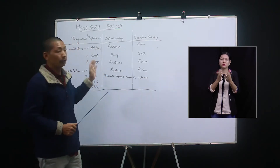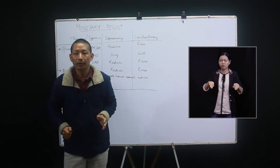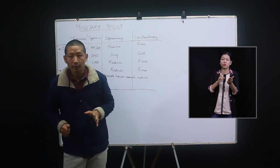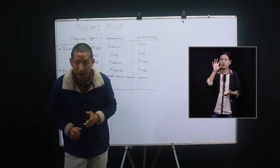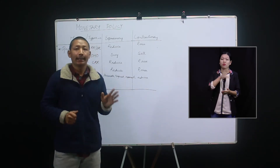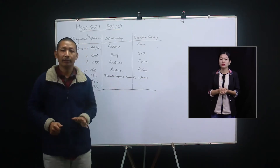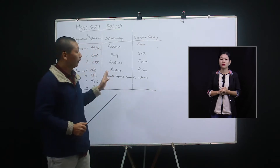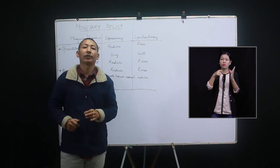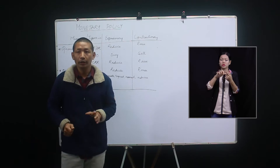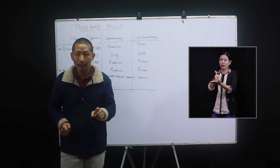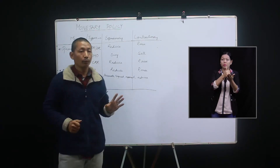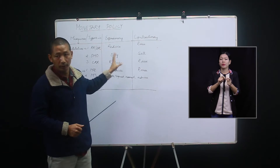So what is monetary policy? It's actually the policy of a central bank of a country in influencing the money supply and credit in the economy. Once again, it says the policy of the central bank of a country to influence the money supply and credit in the economy. So what is the main objective of monetary policy?